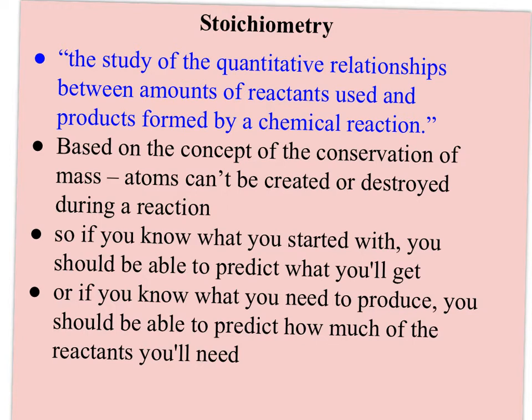It's based on the idea that atoms can't be created or destroyed — what we call conservation of mass. So the idea is that if you know what you start with, how many grams of reactants you have, you should be able to predict how many grams of product you can produce. Or if you know how much product you need to produce, you should be able to calculate how much reactant you need to start with.